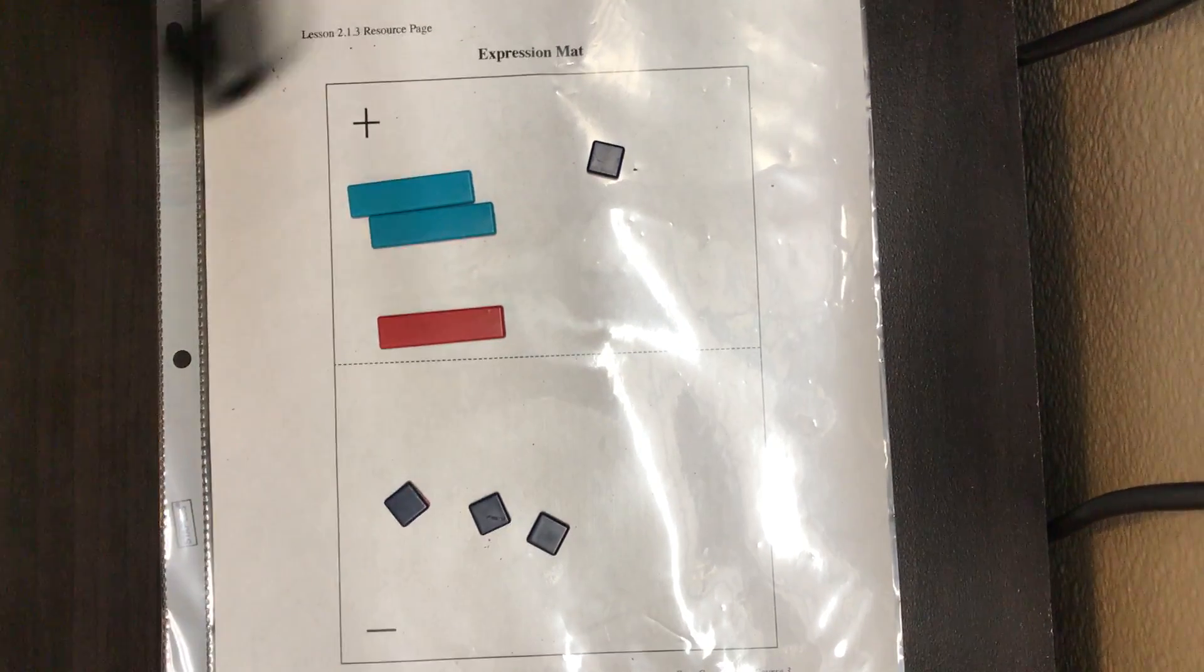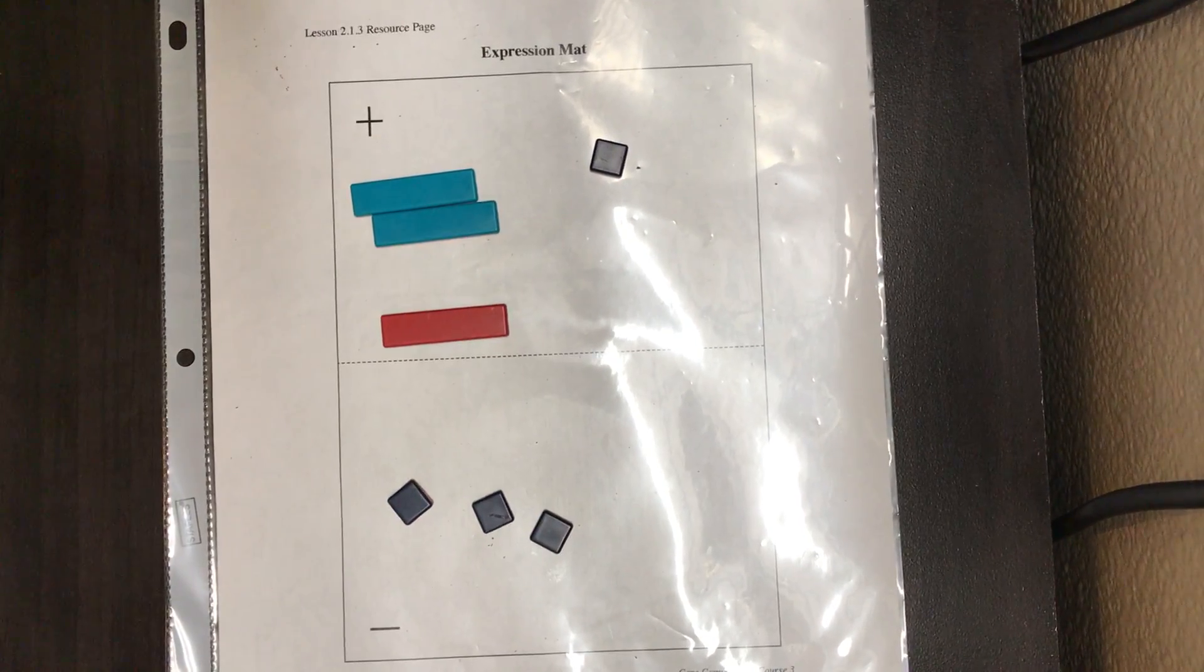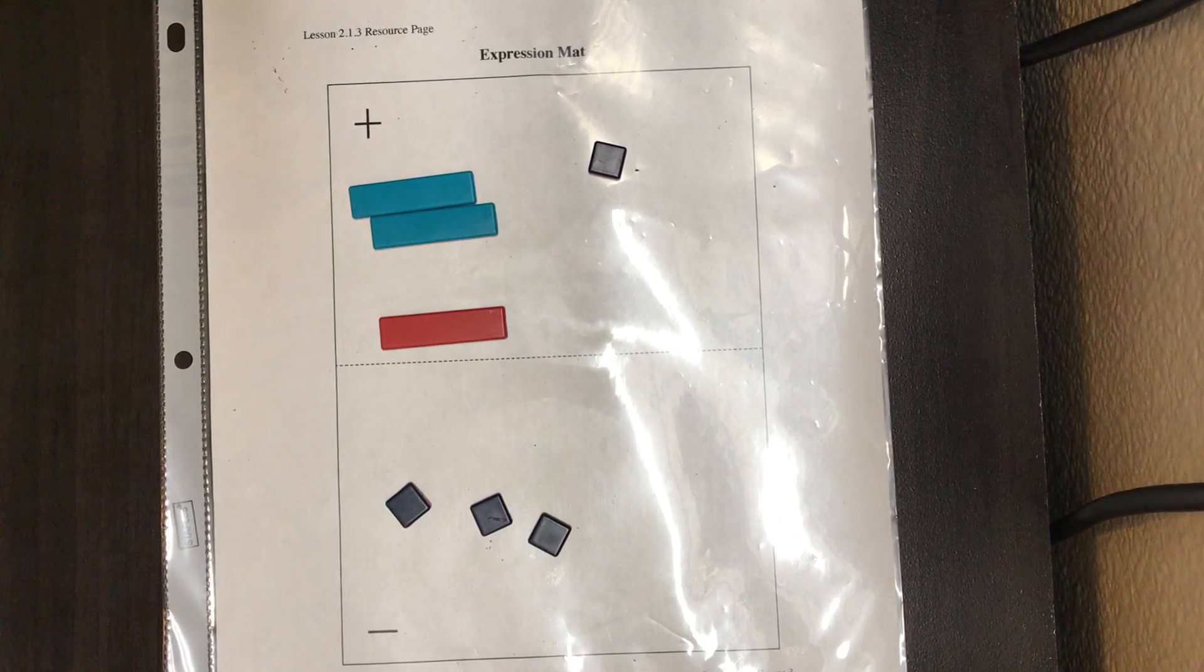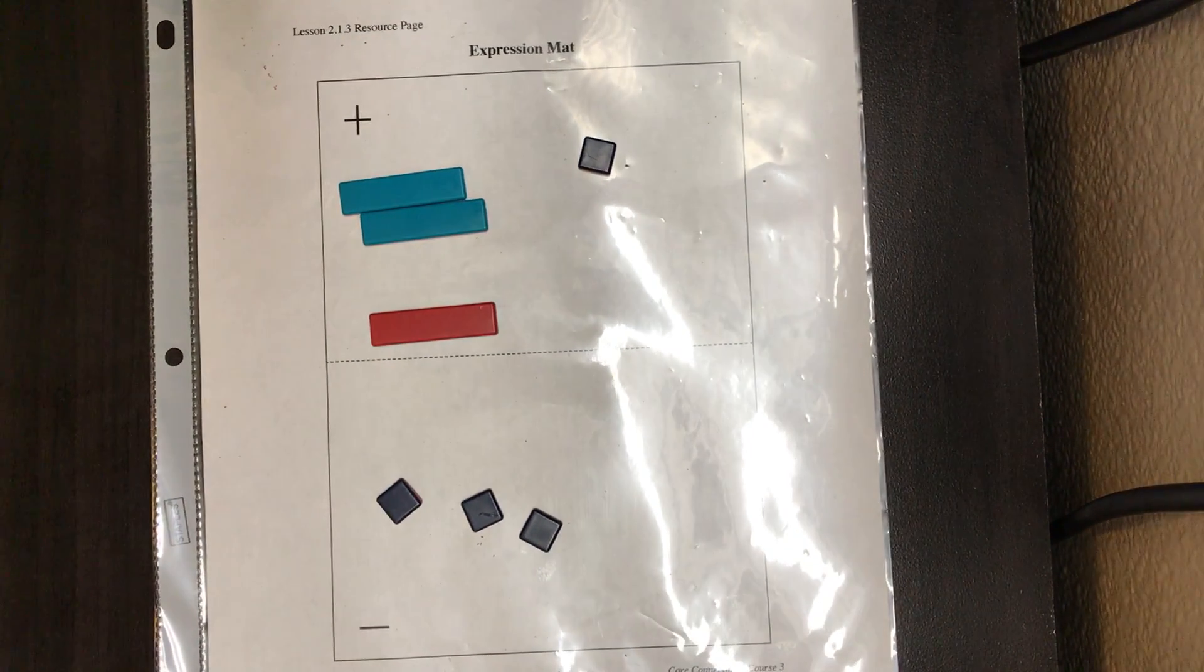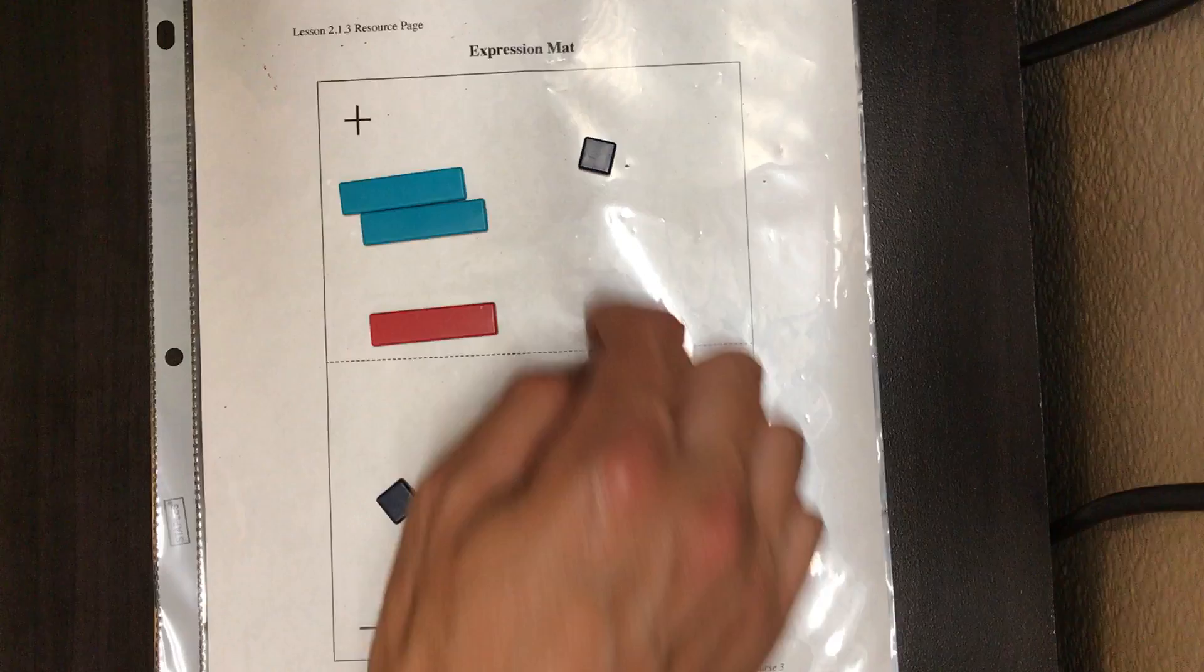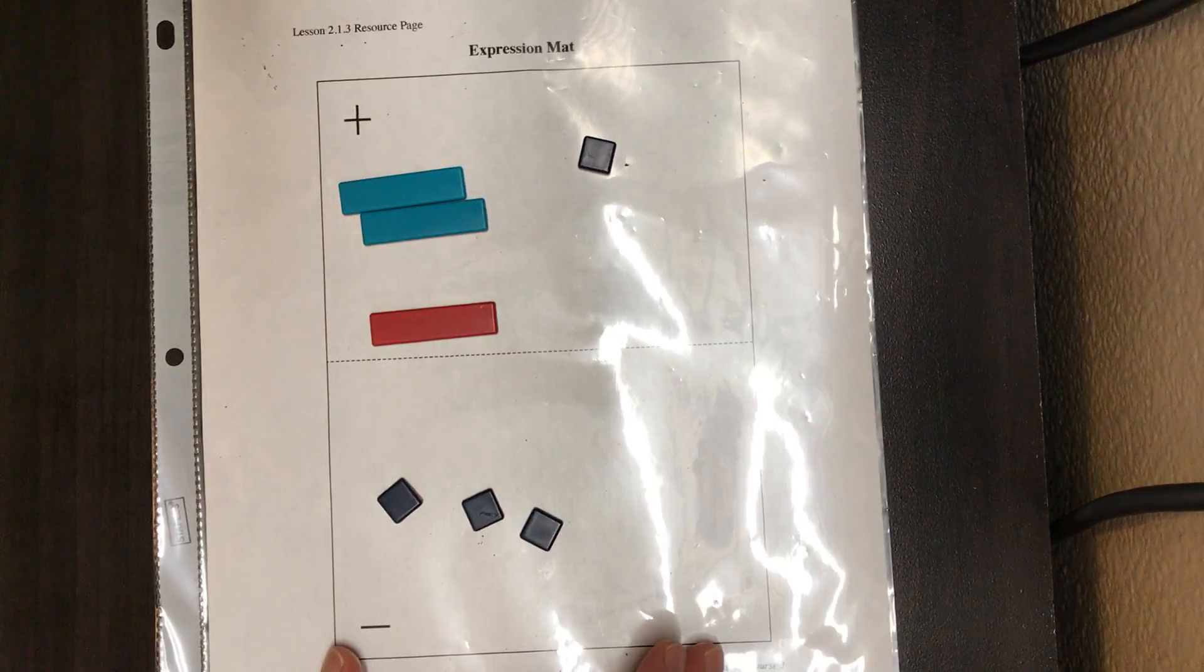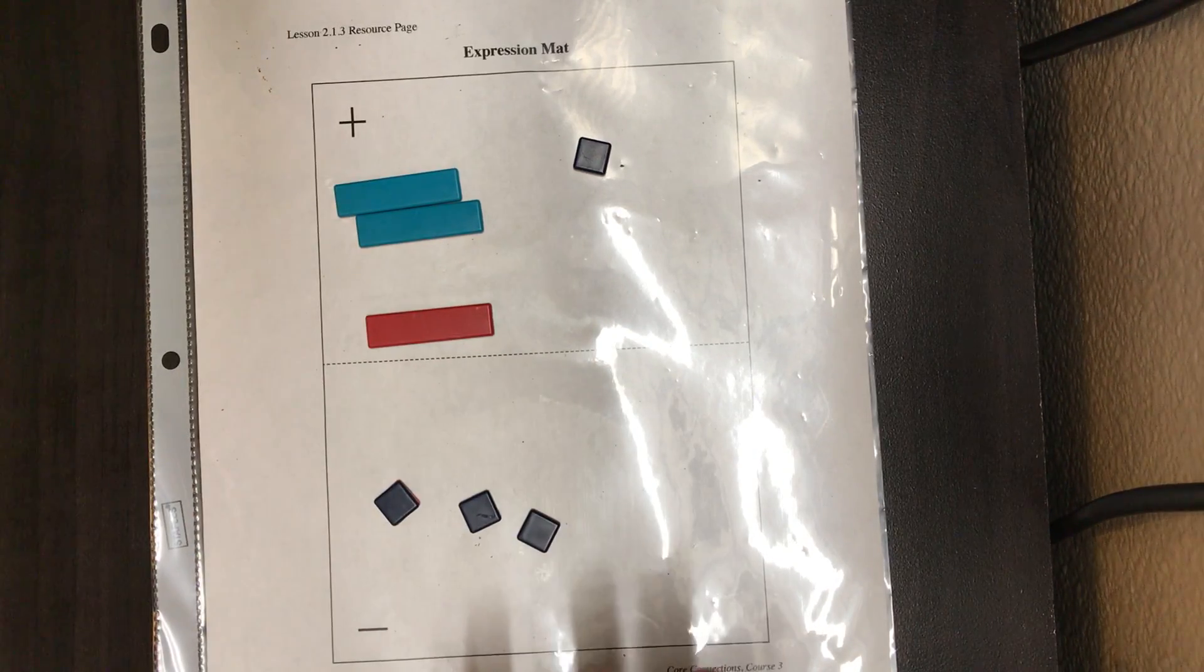All right, welcome everybody to video one of combining like terms with an expression mat. We're going to start with algebra tiles already on the mat. You've probably noticed there is a positive section and a negative section. First, let's look at what's going on in each section.